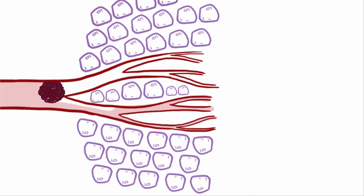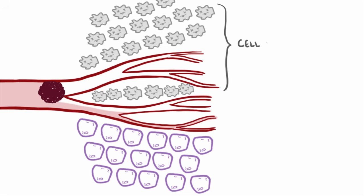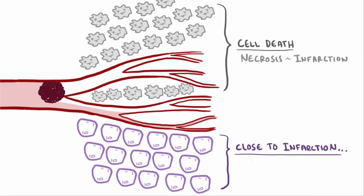If the oxygen supply is low enough or long enough, it can cause cell death, and if enough cells die in a region of tissue, we call that tissue necrosis and infarction. In some cases, areas of tissue are getting close to infarction as cells begin to die but can still be saved if they receive blood. This high-risk area teetering on the brink of death is called the ischemic penumbra.